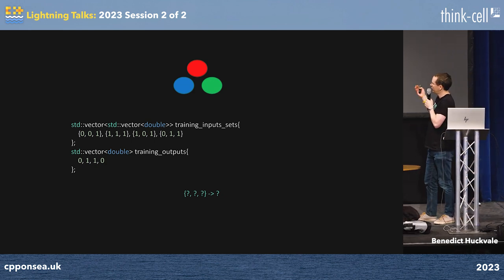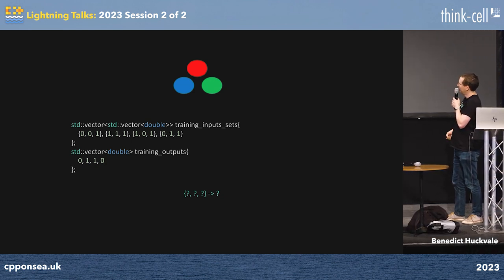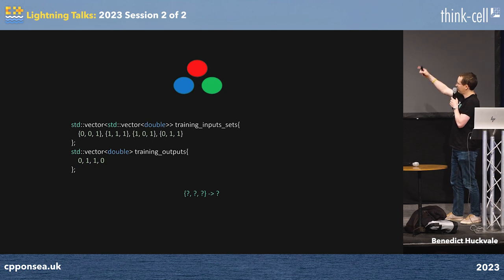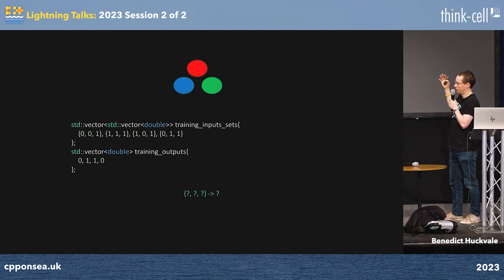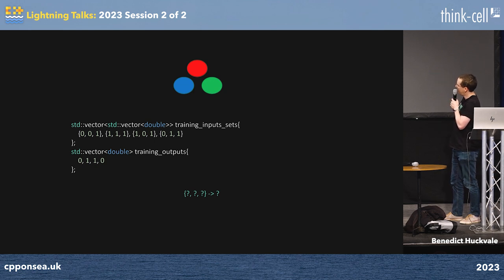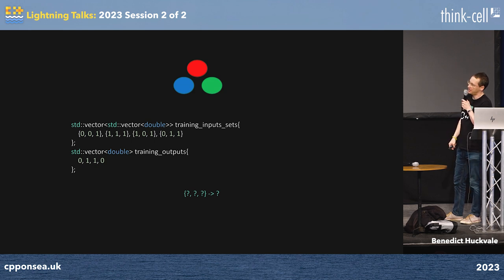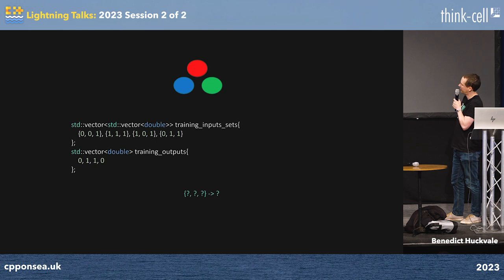What I want to do is solve a quick problem where I've got some data input — three numbers as inputs — and I've got some outputs which I want to train to reproduce. The output I want is just the first number in each training input, if that makes sense.